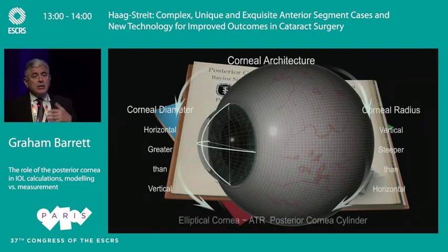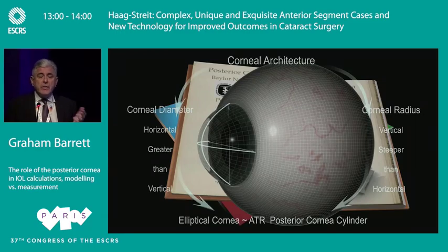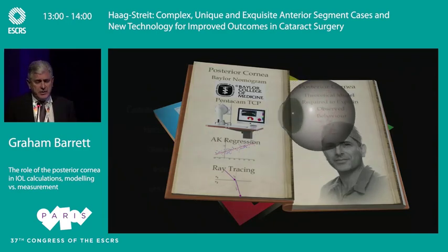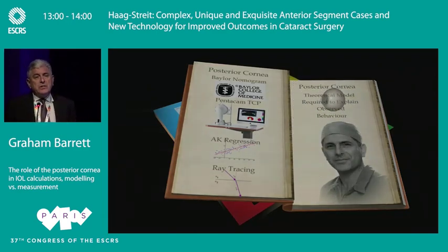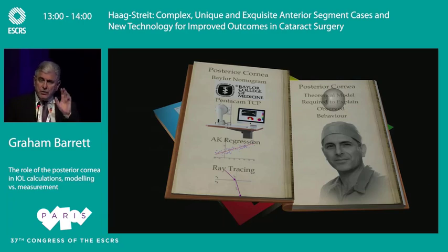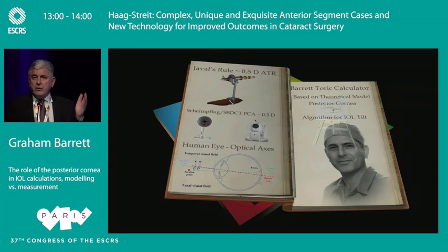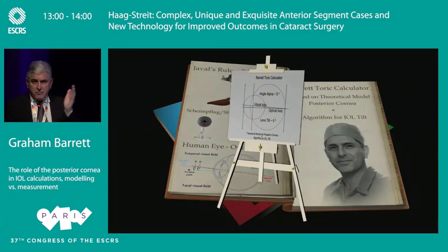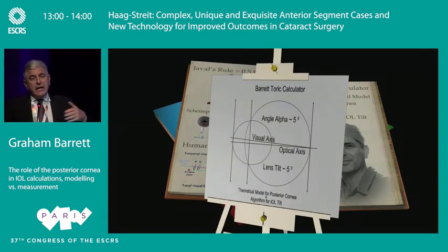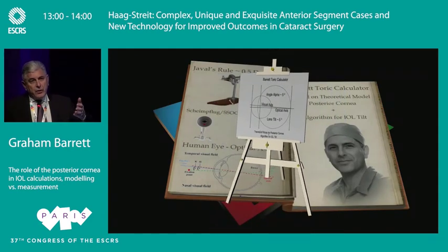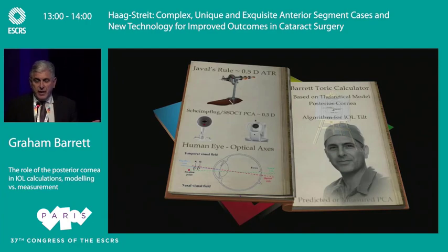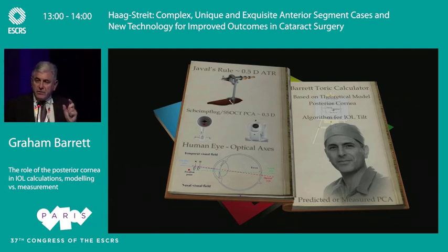My own method is a theoretical model — not regression-based or population-derived — based on an explanation I developed to explain the phenomenon of posterior corneal astigmatism, essentially based on the fact that the eye has a larger diameter in the horizontal meridian. Also within my formula is a recognition that when you measure the cornea with any device, you measure on the visual axis, but the optical elements are aligned on the optical axis. This difference — angle alpha — makes the lens appear tilted, adding an additional component to the unexplained against-the-rule astigmatism we observe.